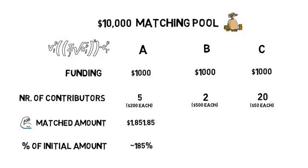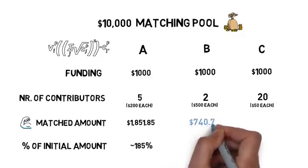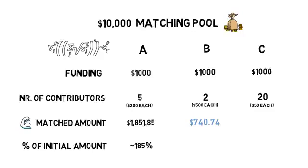Project B received only a match of $740.74 which is around 74% of the total contributions.